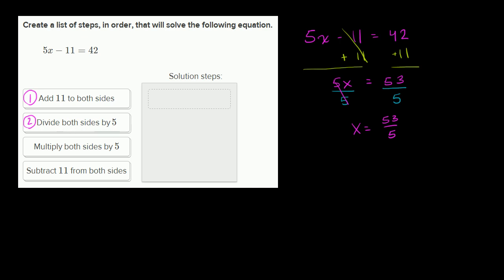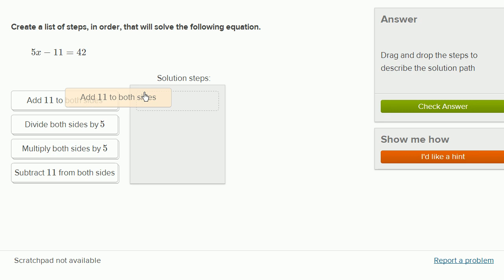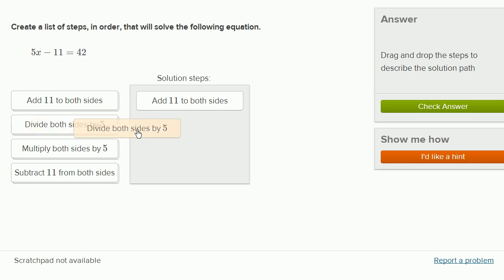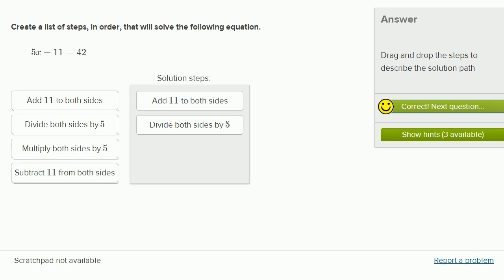So let's fill that in. So I'm going to add 11 to both sides. Adding 11 to both sides, then I'm just left with 5x is equal to 53. And then I divide both sides by 5. Got it right.